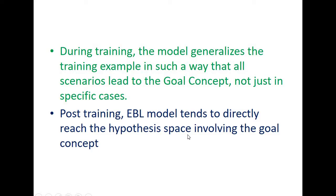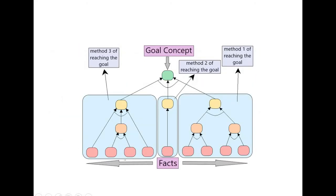Post-training, the EBL model tends to directly reach the hypothesis space involving the goal concept. In this example, the goal is attained from three different methods — one from the first subtree, one from the second subtree, and one from the left-hand side subtree indicating how the goal is attained using the method tree. These are all the various methods of obtaining the goal from the given inputs and facts, as identified by EBL.